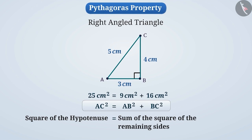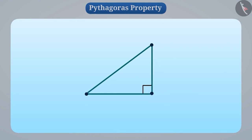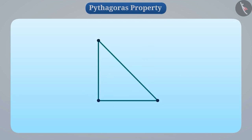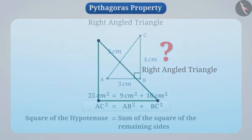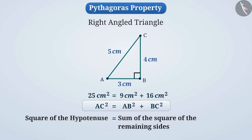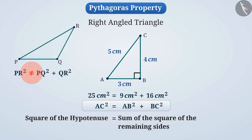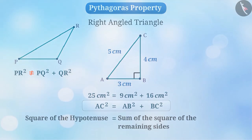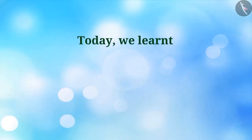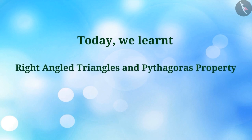This property has many uses, such as finding the third side of a right-angled triangle when two sides are known, or proving that a given triangle is a right-angled triangle. Note that the Pythagoras property can be used only for right-angled triangles; it cannot be used if the triangle is not a right-angled triangle. Today we have learned right-angled triangle and the Pythagoras property. In the next video, we will see some examples related to these.